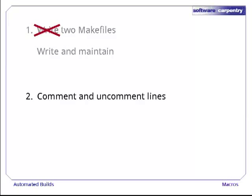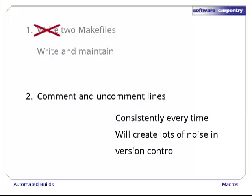Our second option is to put everything in one makefile and then comment out the bits intended for the machine we aren't on. This is problematic, too. First, we have to make sure we always comment and uncomment lines consistently. If we uncomment the line for creating the paper on our laptop but forget to uncomment the line for building the figures, we're going to have another debugging headache. Commenting and uncommenting lines also makes life more difficult for our version control system, since it would mean that the next time we update it on the other machine, its makefile would be overwritten.